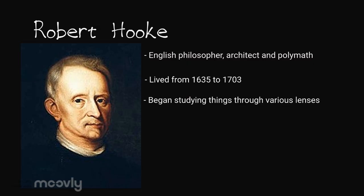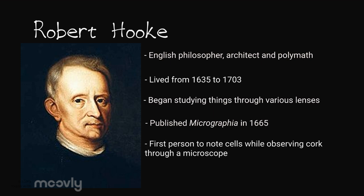Around 1660 he began research studying various things through microscopes and telescopes. In 1665 he published a book called Micrographia on the subject. It contains many significant and notable things, but we are going to focus on his plant studies. He was the first person to note that a piece of cork he was observing was made up of small compartments. He called them cells from the Latin cella, meaning room.